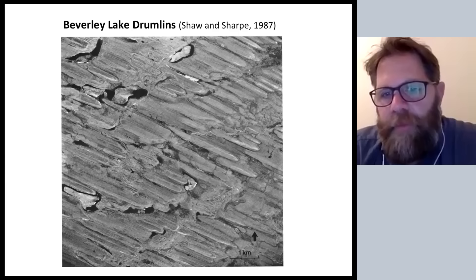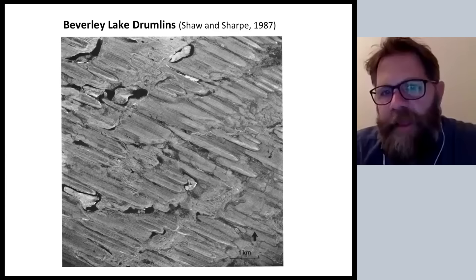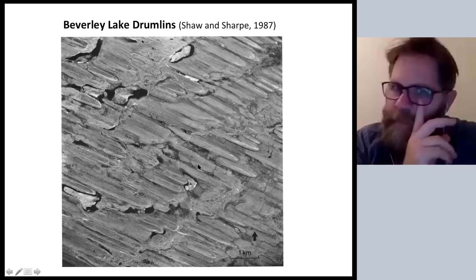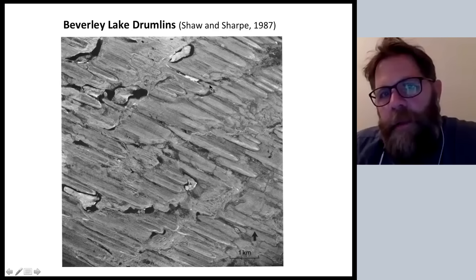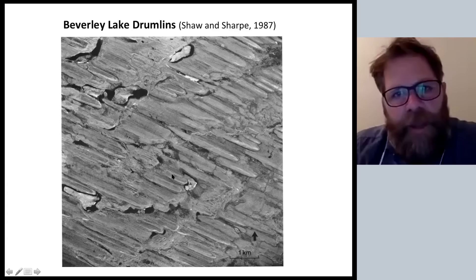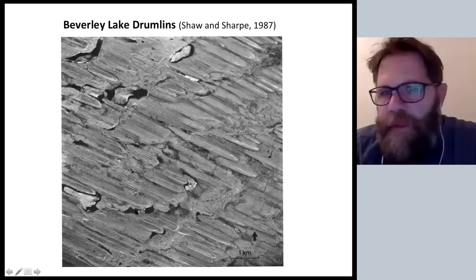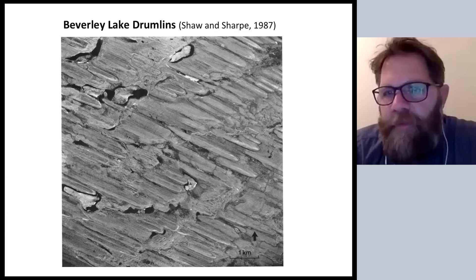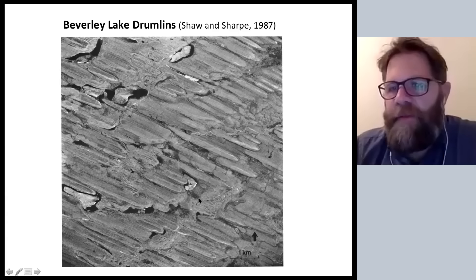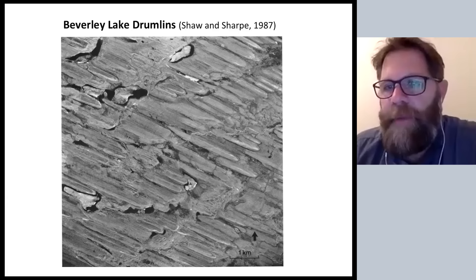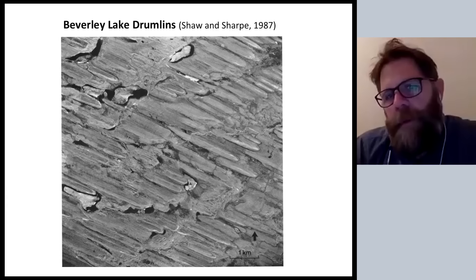We've defined drumlins early on and now we're back to them, having left those smaller-scale bedrock forms. These are forms two to three kilometers in length. Now that we've looked at the bedrock forms, there are lots of morphological characteristics we can recognize on these drumlins. For example, up here where the A is, look at that — there's a crescentic scour and they extend laterally into furrows. The vast majority of these drumlins have morphological characteristics that we ascribe to this idea of a horseshoe vortex, which is a very well-established hydrodynamic phenomenon.